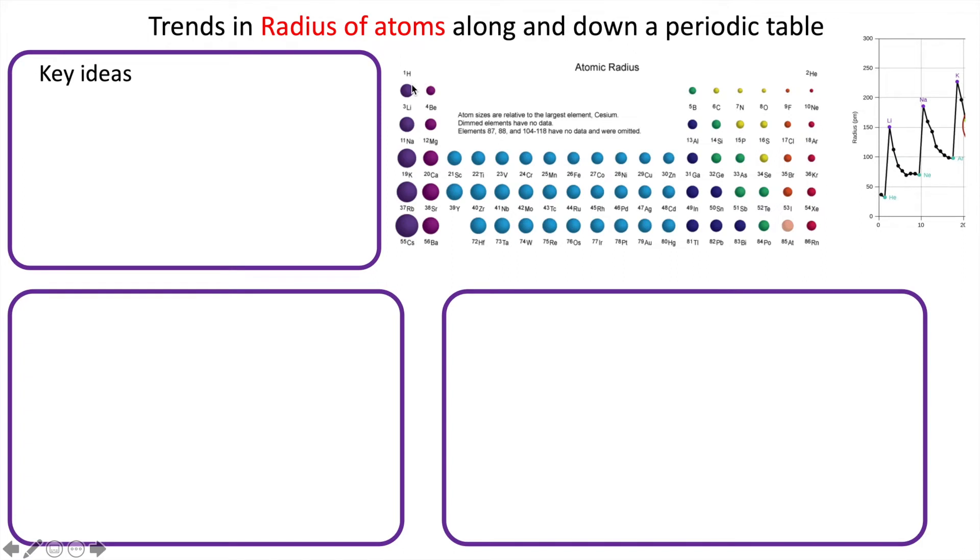Look at how the radius of atoms change as you go along a period and down a group, and how the radius of ions change as you go along a period and down a group.